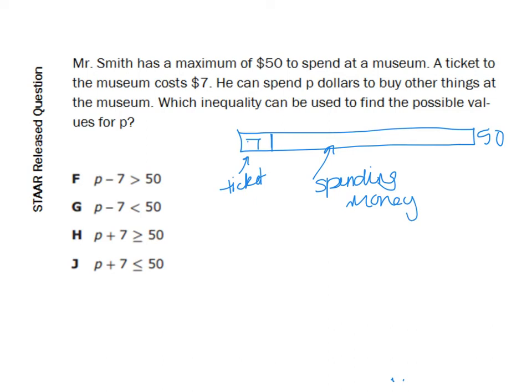Think of it this way. You know I love my pictures. We have a bar. That's his $50. I know he has $7 to get into the museum. This is the ticket. And I know this is his spending money here. So I know that whatever 7 is and whatever P is, can it be larger than 50? No. It has to be smaller than. So it has to be less than 50. So this $7 plus whatever I spend for P has to be less than 50.